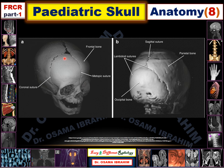The pediatric skull is characterized by sutures which are developing and unfused until certain periods of life. The suture in the midline separating the parietal bones on both sides is called the sagittal suture. In the anterior view, the frontal bone can be separated by an accessory suture called the metopic suture. The frontal bone is separated from the parietal bone by the coronal suture on both sides. From the posterior, the occipital bone is separated from the parietal bone by the lambdoid suture.